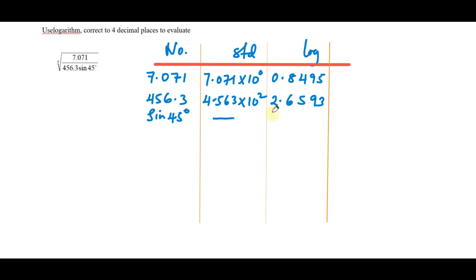You don't need to write this one in standard form. That will give bar 1.8495. These two numbers you're multiplying: 456.3 multiplied by sine of 45. When you're multiplying the numbers, we add their logs. So we're going to add those two. Adding them gives 2.5088.